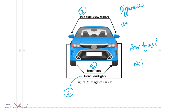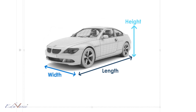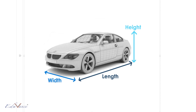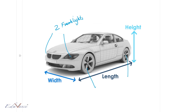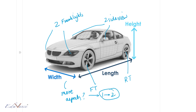So this image versus this image, there are some differences. Let us look at another perspective. In this view, you can see two front lights, the front tire, the rear tire, and the side view mirrors. When you compare this to the images we saw before, in this view we can see more aspects of the car. Why is that?